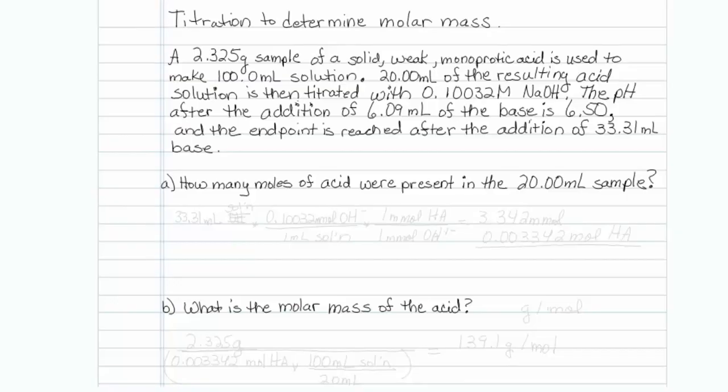How many moles of acid were present in the 20 mil sample? As you know, volume times concentration equals moles. So I have 33.31 mils of hydroxide. That is my volume, and my concentration is 0.10032 moles of hydroxide per 1 mil of solution. I actually need to say I just have 33.31 mils of solution right there. That's a better way to represent that.